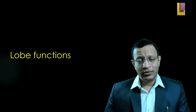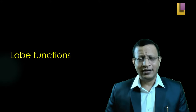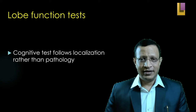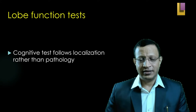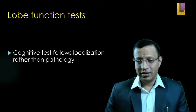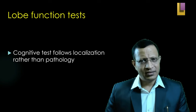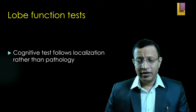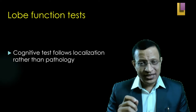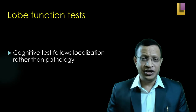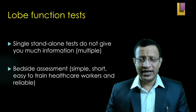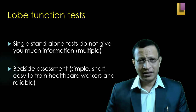Let's discuss how the neuropsych assessment is done. First, let's understand the lobe functions of the brain. Cognitive tests follow localization rather than pathology — that is, cognitive tests are specific for localization. We may do MRI and CT scan to localize, but the extent of impairment will be known only by cognitive tests, that is, by neuropsych assessment. It is important for the clinician to know what tests to do and how to prognosticate the case. A single standalone neuropsych assessment will not give much information; it has to be multiple assessments over a period of time.